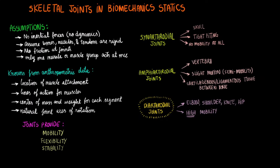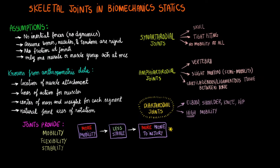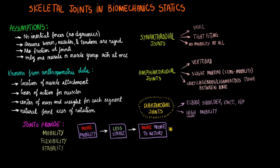With diarthrodial joints, as you increase mobility, you decrease the joint stability, thus making it more prone to injury. Conversely, as you decrease joint mobility, the joint becomes more stable and less prone to injury. Diarthrodial joints will have articular cartilage, a ligamentous capsule, and synovial membrane and fluid inside an articular cavity. It is a quite complex joint to allow for all of the movement it performs.